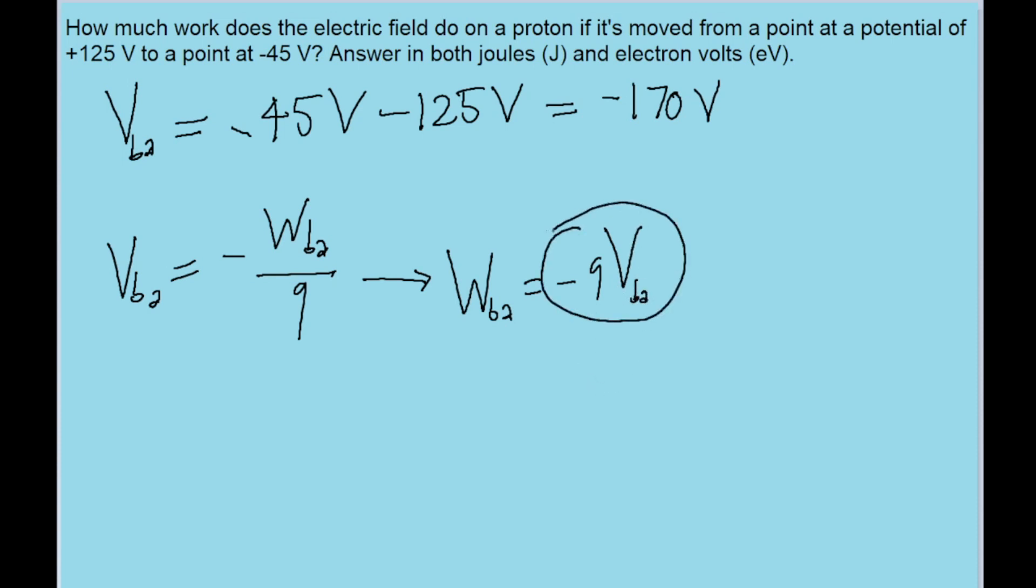So now we just want to plug in some stuff into there. So first for the charge, the problem mentions that it's a proton and so a proton has an electric charge of 1.60 times 10 to the power of negative 19 coulombs and the voltage is as we've mentioned earlier, negative 170 volts. So if we put this into our calculator, then we find a work of about 2.72 times 10 to the power of negative 17 joules.